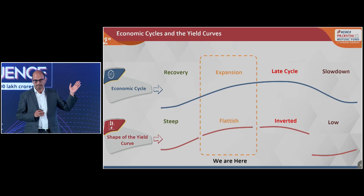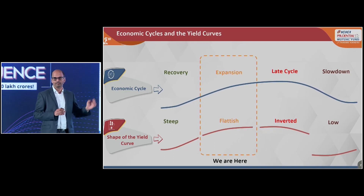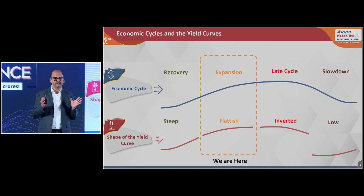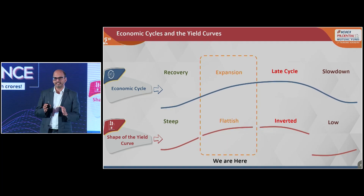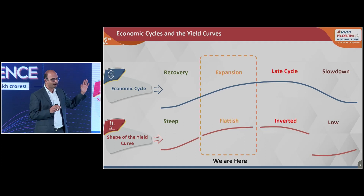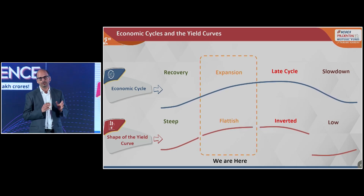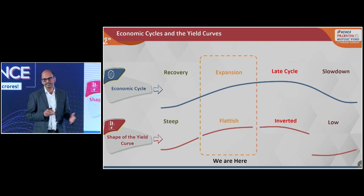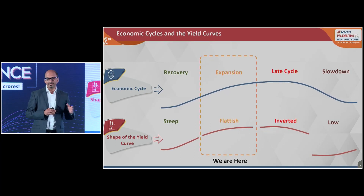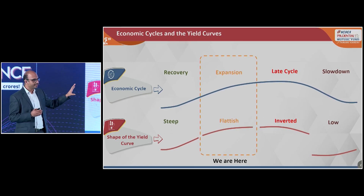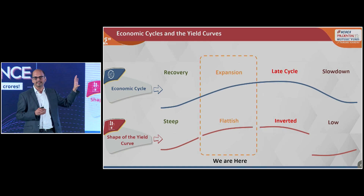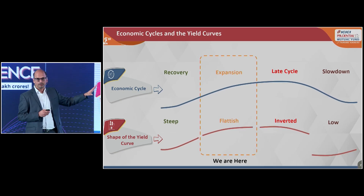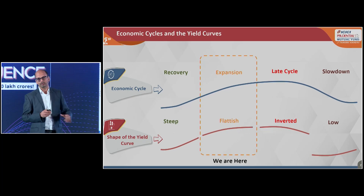Once you are through the expansion phase, you will enter a late cycle — a cycle of excesses. If you remember back in 2010 to 2013, we had this problem of late cycle. In this phase, normally inflation goes up, bank balance sheets come under pressure, and macro issues like current account deficits move up too much. In this part of the cycle, the RBI tightens interest rates so that the economic cycle comes back to a neutral phase. Once that is done, you come to a slower phase of economic growth and the RBI will start to cut interest rates again.